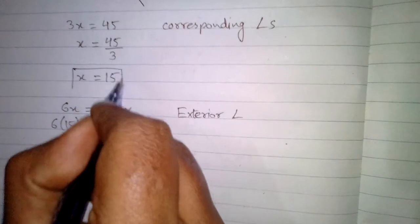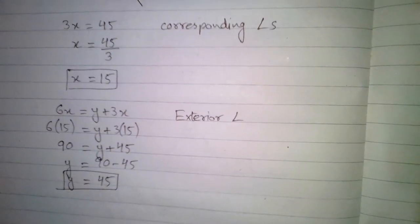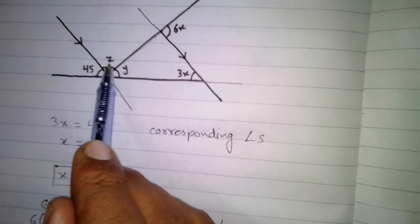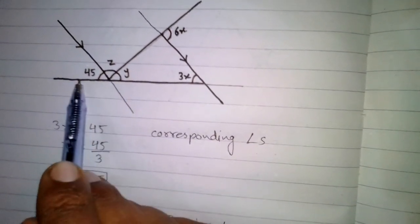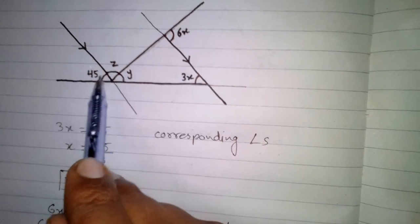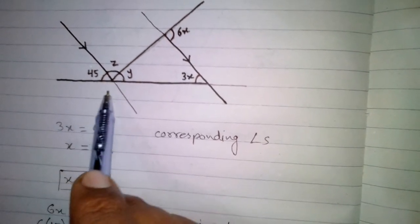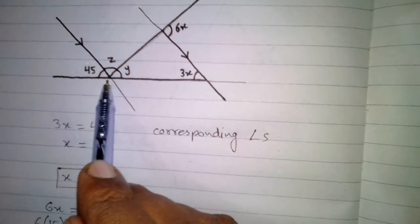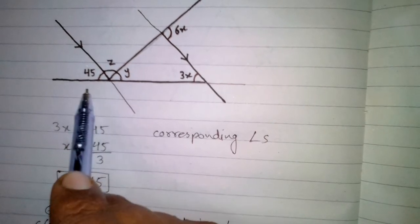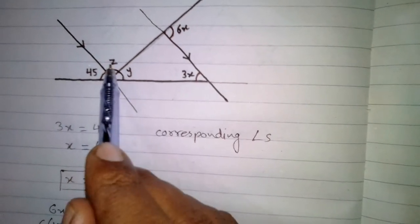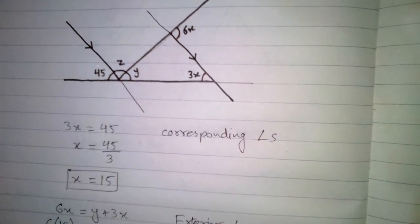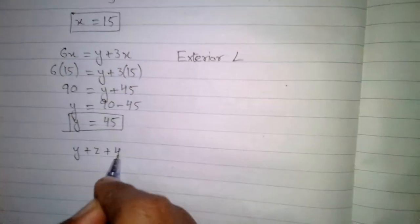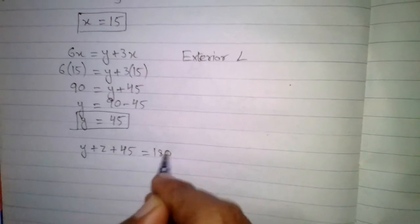Now we have the value of X, which is 15, and the value of Y, which is 45. We now need to find the value of Z. There are three angles on a straight line formed at a single point, and the sum of angles on a straight line is 180 degrees, so Y plus Z plus 45 is equal to 180.